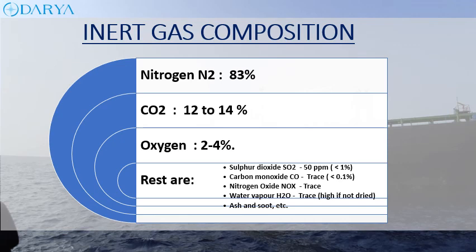Inert gas composition: nitrogen is around 83%, carbon dioxide 12 to 14%, oxygen 2 to 4%, and the rest are traces of sulfur dioxide, carbon monoxide, nitrogen oxide, water vapors, ash, and soot.